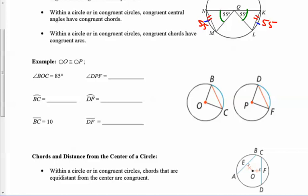For example, if these two circles are congruent and angle BOC is 85 degrees, then angle DPF would also have to be 85 degrees. Arc BC would also be 85 degrees and arc DF would be congruent to arc BC. If BC is 10, then DF is 10.